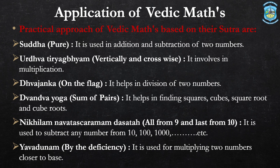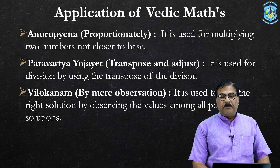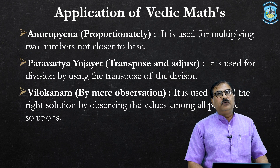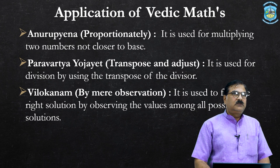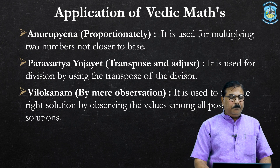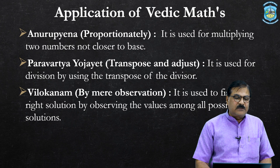Yavadunam — meaning by deficiency — is used for multiplying two numbers closer to the base. Anurupena — meaning proportionately — is used for multiplying two numbers not closer to the base; for example, if you take 75 and your base is 100, then 75 is very far from the base 100. Paravartya Yojait — meaning transpose and adjust — is used for division by using the transpose of the divisor.